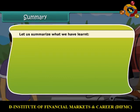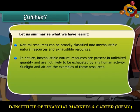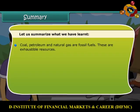Let's summarize what we have learned so far. Natural resources can be broadly classified into inexhaustible and exhaustible resources. Inexhaustible natural resources are present in unlimited quantity and are not likely to be exhausted by any human activity. Sunlight and air are examples of such resources. The amount of exhaustible resources is limited and they can be exhausted by human activities. Forests, wildlife, coal, natural gas, petroleum, and minerals are examples. Coal, petroleum and natural gas are known as fossil fuels and are exhaustible resources.